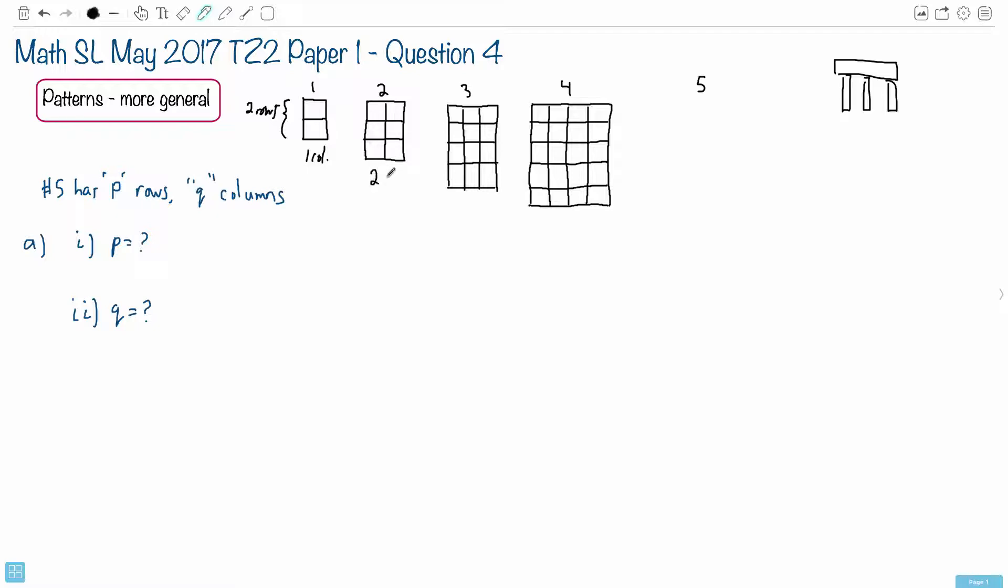For example, this one here has two columns. And this one here has three columns and four columns and so on. And this is number of rows here. It's one, two, three, four, five rows for example. And so on.